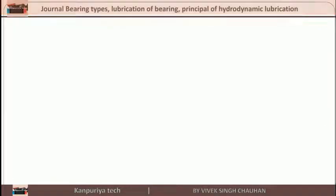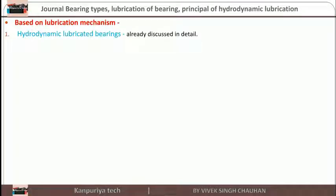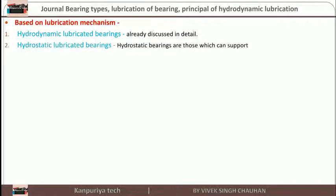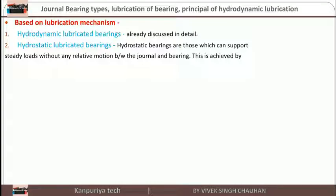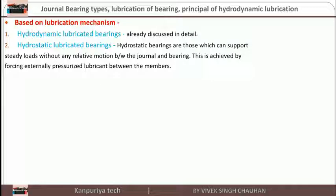The next classification is based on lubrication mechanism. The second type is hydrostatic lubricated bearing. Hydrostatic bearings are those which can support a steady load without any relative motion between journal and bearing — that condition is known as static condition. This is achieved by forcing externally pressurized lubricant between the members. In the diagram of a hydrostatic bearing, high pressure oil is supplied to the bearing, which separates the two parts from each other.